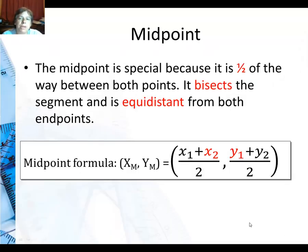The midpoint is special because it is half of the way between both points. It bisects, bisect means cuts in half, the segment, and the midpoint is equidistant from both endpoints. This is the midpoint formula from your math chart, x1 plus x2 all over 2, and y1 plus y2 all over 2.